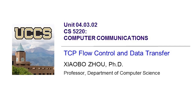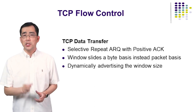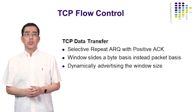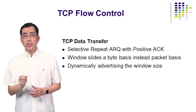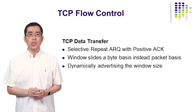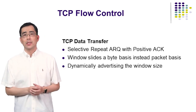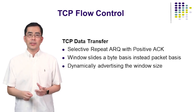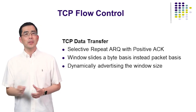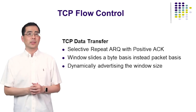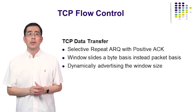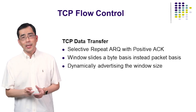Today we discuss TCP flow control and data transfer. After a TCP connection is established by a three-way handshake procedure, to provide reliable data transfer, TCP uses a selective repeat ARQ protocol with positive acknowledgement implemented by a sliding window. The difference here is that the window slides on a byte basis instead of a per-packet basis. TCP can also apply flow control over a connection by dynamically advertising the window size.